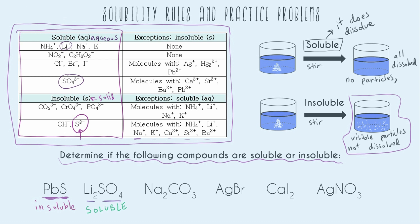Now sodium carbonate. I see sodium right here in the grid, and there are no exceptions listed — so no matter what is paired with sodium, it's going to be soluble. That means this compound is completely soluble. Just to double-check: carbonate is listed as insoluble, but sodium is one of its exceptions. Either way, I get to the same conclusion: sodium carbonate is soluble.